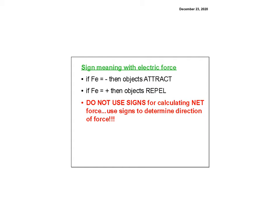Now, signs have meaning with electrical force. For gravity force, technically, Fg is always negative, which means it always attracts. You'll see that sometimes. We don't concentrate on that, because Fg, the force of gravity, is always attraction, so we don't really care.